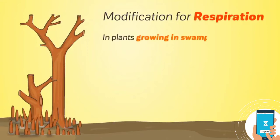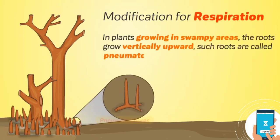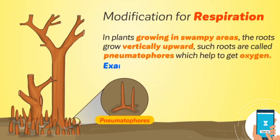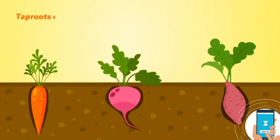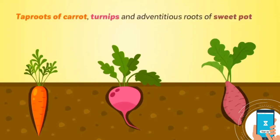Modification for respiration: in plants growing in swampy areas, the roots grow vertically upward. Such roots are called pneumatophores, which help to get oxygen. Example: Avicennia germinans.